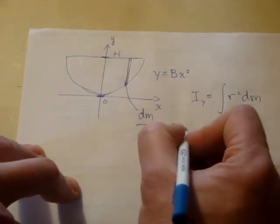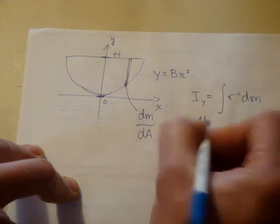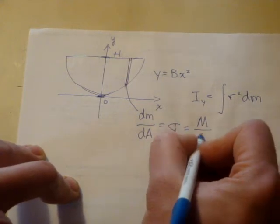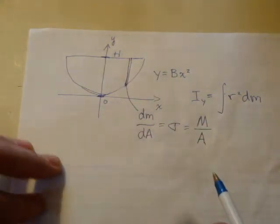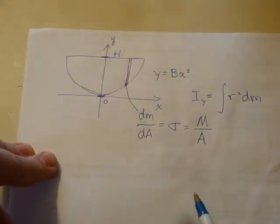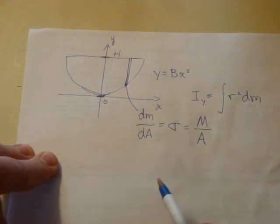We also can relate sigma to the total mass, since it's a uniform density. The total mass divided by the total area also has this same ratio. And we're told in the problem what the total mass of the object is. I'm not going to include that number at this time, but that's useful.